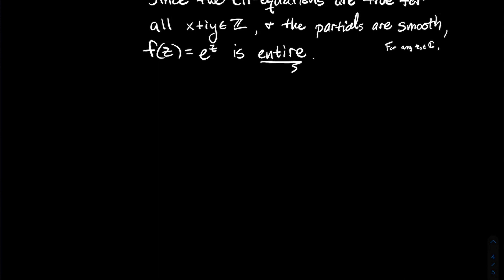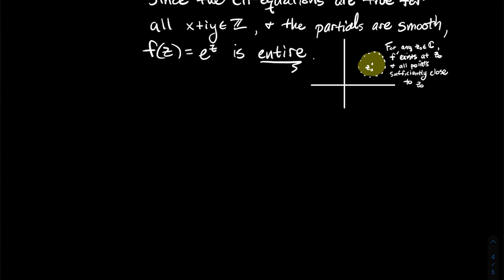That smoothness was the extra condition that allows us to conclude this function is entire. The Cauchy-Riemann equations holding alone weren't quite enough; a little more is required. Entire means the function is analytic — or holomorphic — for all complex numbers. For any z₀, not only must the derivative exist at z₀, but we also need to draw a small disk around z₀ where f′ exists at all points within that disk. I'm using holomorphic and analytic interchangeably, though some books prefer one term over the other.